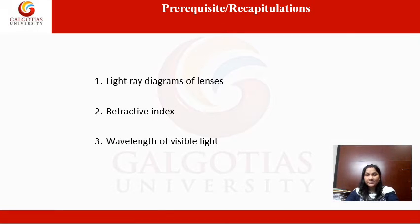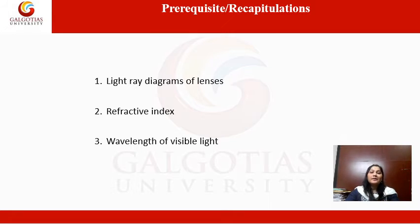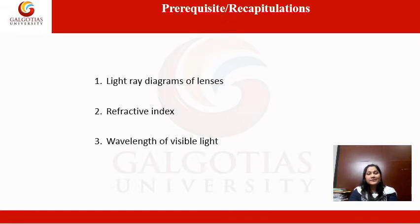What are the prerequisites for this lecture? Before coming to this lecture, you should know how to make ray diagrams using lenses. You must be aware of the refractive index — its definition and the impact of refractive index on the light path. You should also know about the wavelength of visible light, meaning which color of light has a longer wavelength and which has a shorter wavelength.